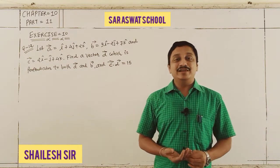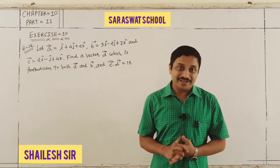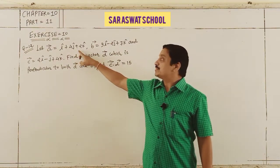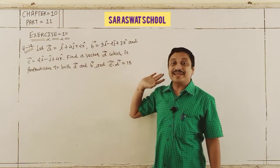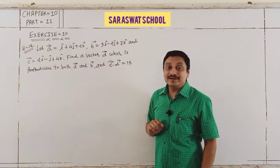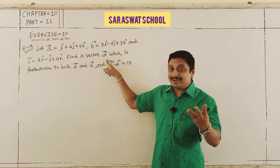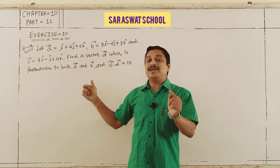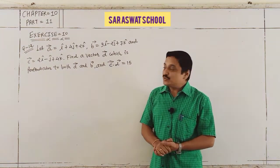Students, today this numerical is very big and very important. In Question 12, let vector a = i + 4j + 2k, vector b = 3i − 2j + 7k, and vector c = 2i − j + 4k. Find vector d — yes, it is a 4th vector — defined as perpendicular to both a and b, and c dot d = 15.